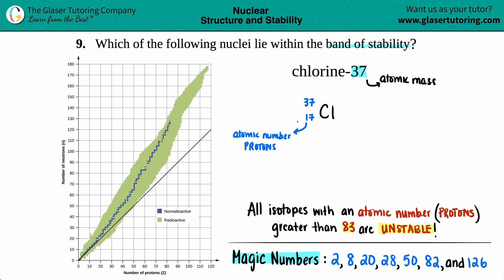In order to find out whether you're in the band of stability, the easiest way is to just see how many protons and neutrons you have. In this case we have 17 protons. To find out the number of neutrons, remember that your atomic mass is protons plus neutrons.